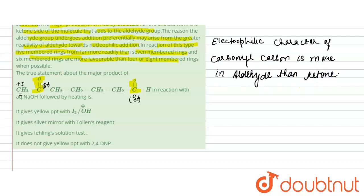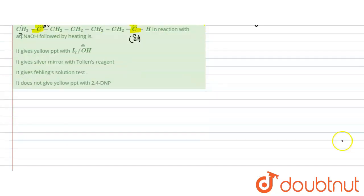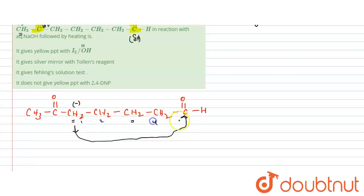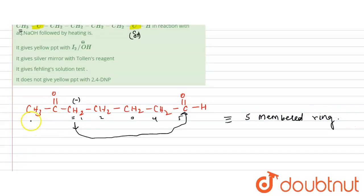Now let's see how the intramolecular attack is favored. The substrate is: CH3–C=O–CH2–CH2–CH2–CH2–C=O–H. The alpha hydrogen on the carbon adjacent to the ketone loses a proton, forming a negative charge. If this negative charge attacks the aldehyde carbonyl carbon, counting the atoms in the ring formed: one, two, three, four, five — you get a five-membered ring.